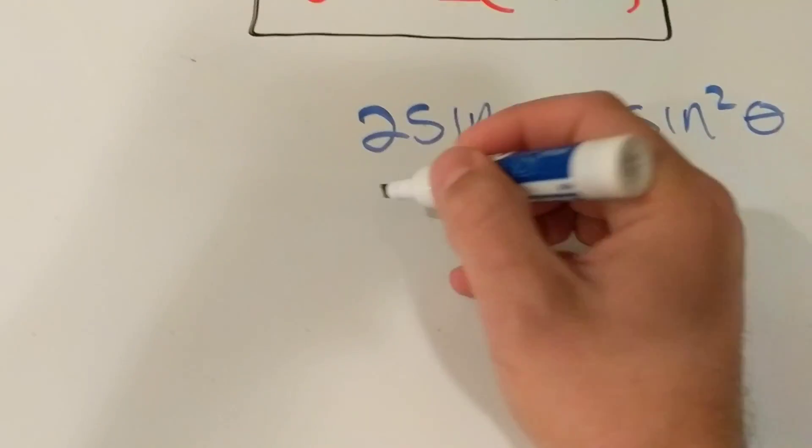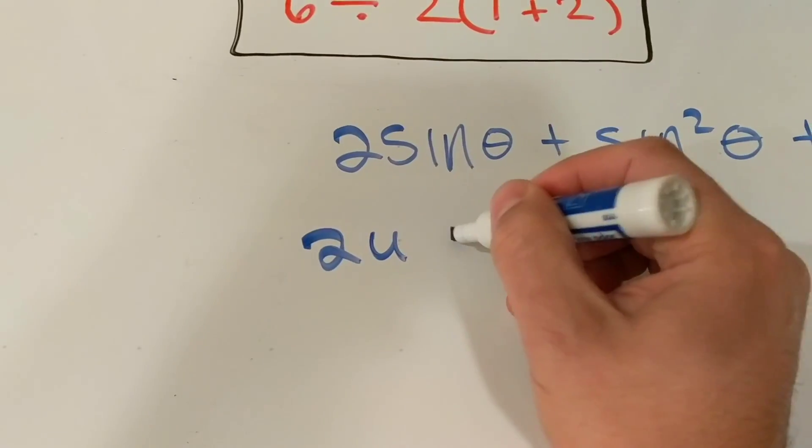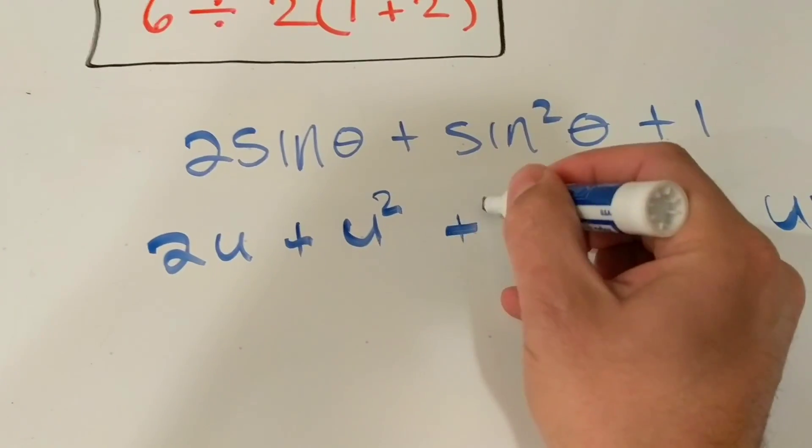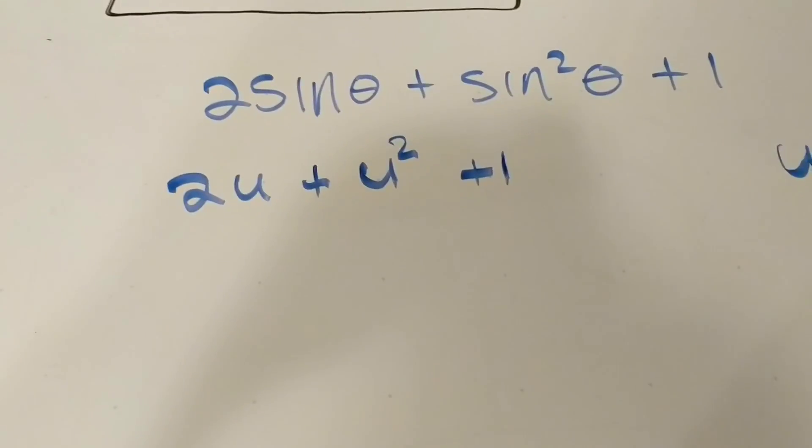Well, you can do what's called u-substitution where you say u is equal to sine of theta. So now what I do is in each of these spots where there's sine of theta, I plug in a u, so I've got u squared plus 1.